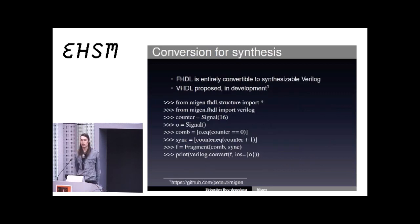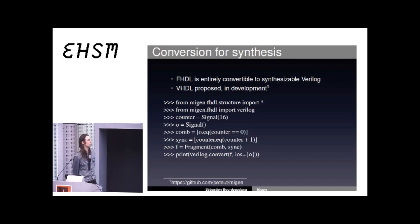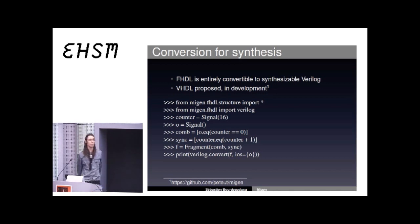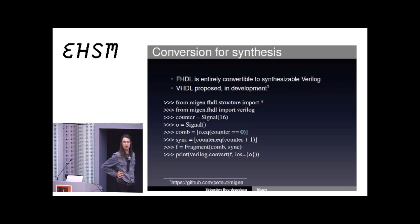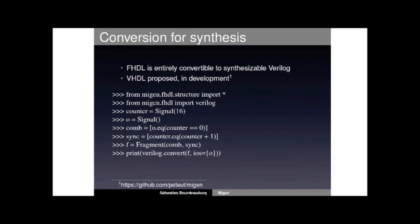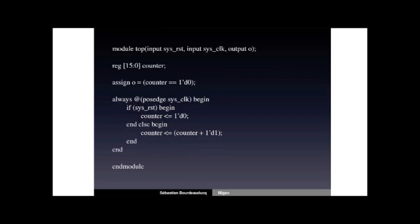Here is a concrete example. First I import the Migen libraries. Then I create a counter signal with 16 bits, and an O signal with one bit. I have one combinatorial statement where the value of O is one when counter is zero and zero otherwise. Then I have a synchronous statement which executes at every clock cycle to increment the counter. I create a fragment from these statements, and finally I convert it to Verilog. Migen automatically generates that source code.